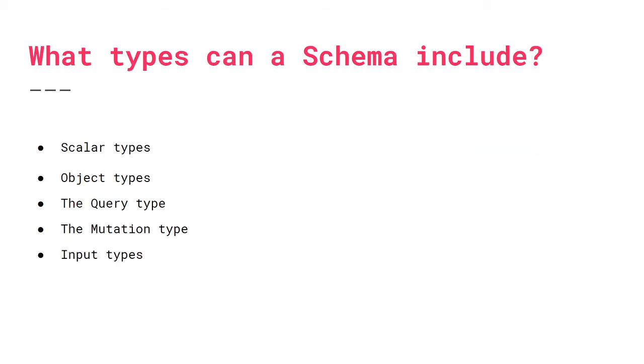So what are the types that a schema can include? There are scalar types, object types, query, mutation, and input types.